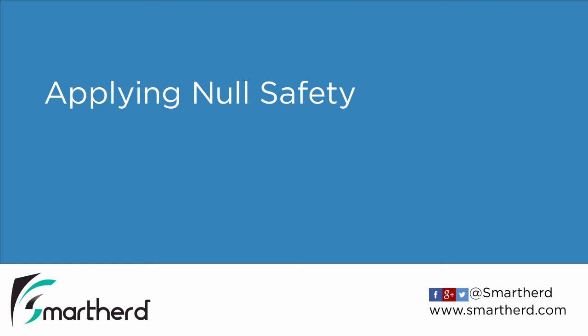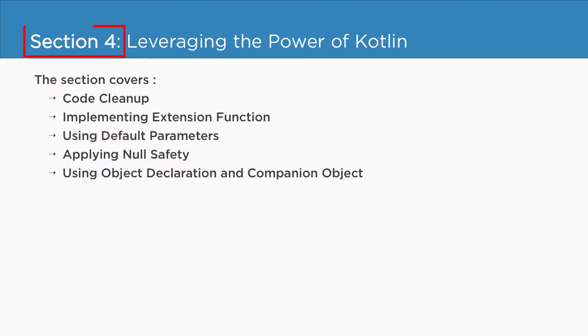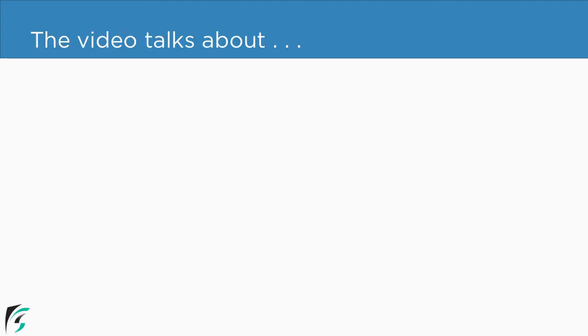Applying null safety. Currently we are in section 4 and we are about to watch this video on applying null safety. In this video we are simply going to make our code robust by applying null checks, and for that we are going to use a few operators.